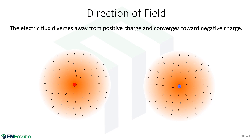A reminder about the direction of the electric flux. If we have a positive charge, the electric flux will diverge from that and be pointed outward. If we have a negative charge, it's essentially the same but in the opposite direction — inward, converging to a negative charge. And just to keep reminding you, there's no such thing as discrete lines. These fields are really a smooth, continuous thing, much more like a fog or cloud.